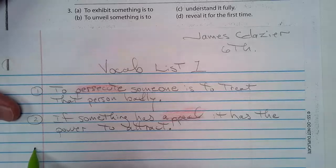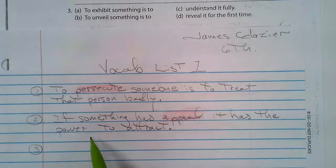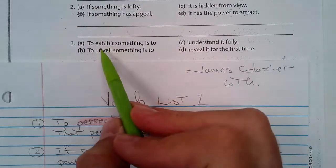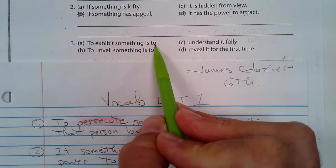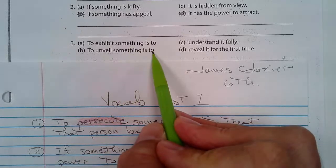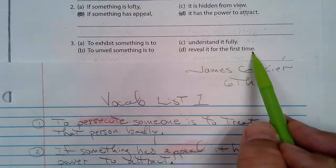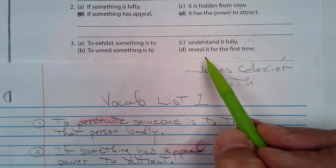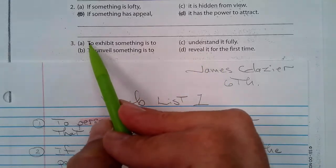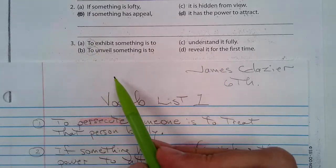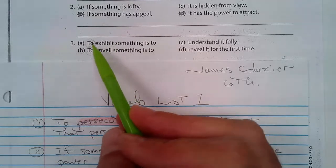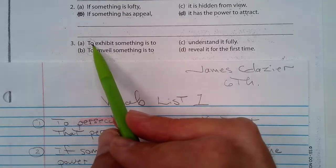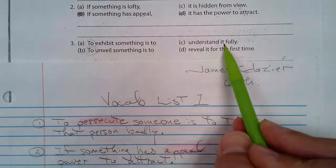There's the third one — I'll do one more. Notice I'm putting a blank line between each one. Number three: here are the four phrases — 'To exhibit something is to,' 'To unveil something is to,' 'understand it fully,' 'reveal it for the first time.' We're putting two of these four together. A and B are the ones that are capitalized, so you know the first part of your sentence is going to be one of these two.